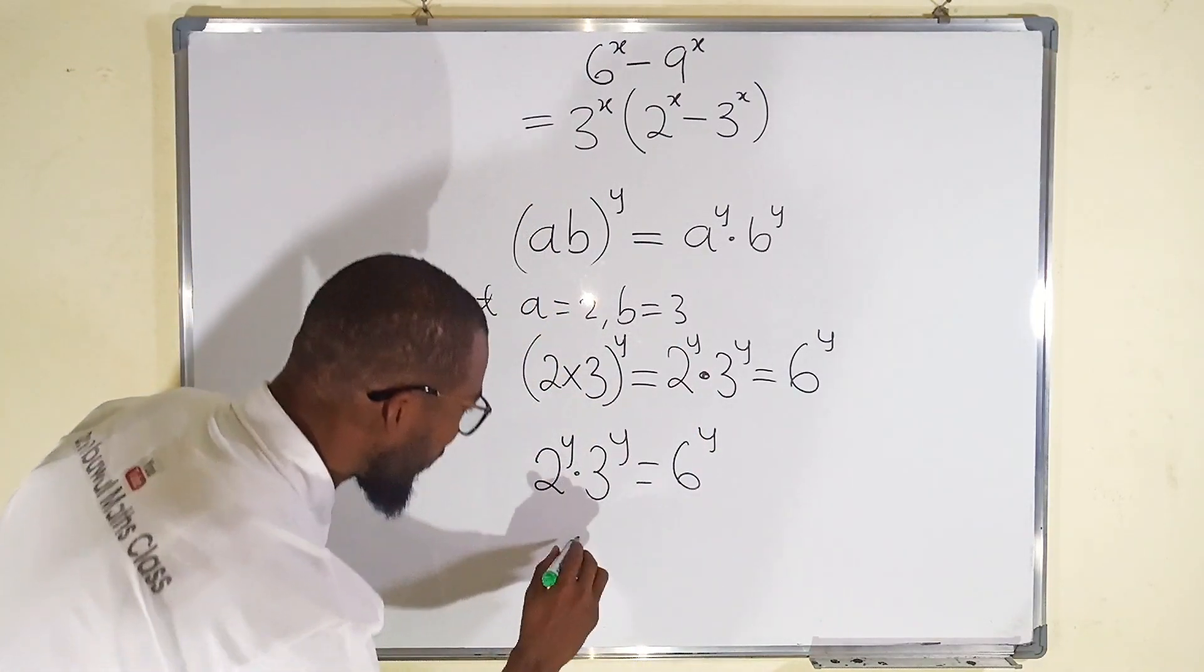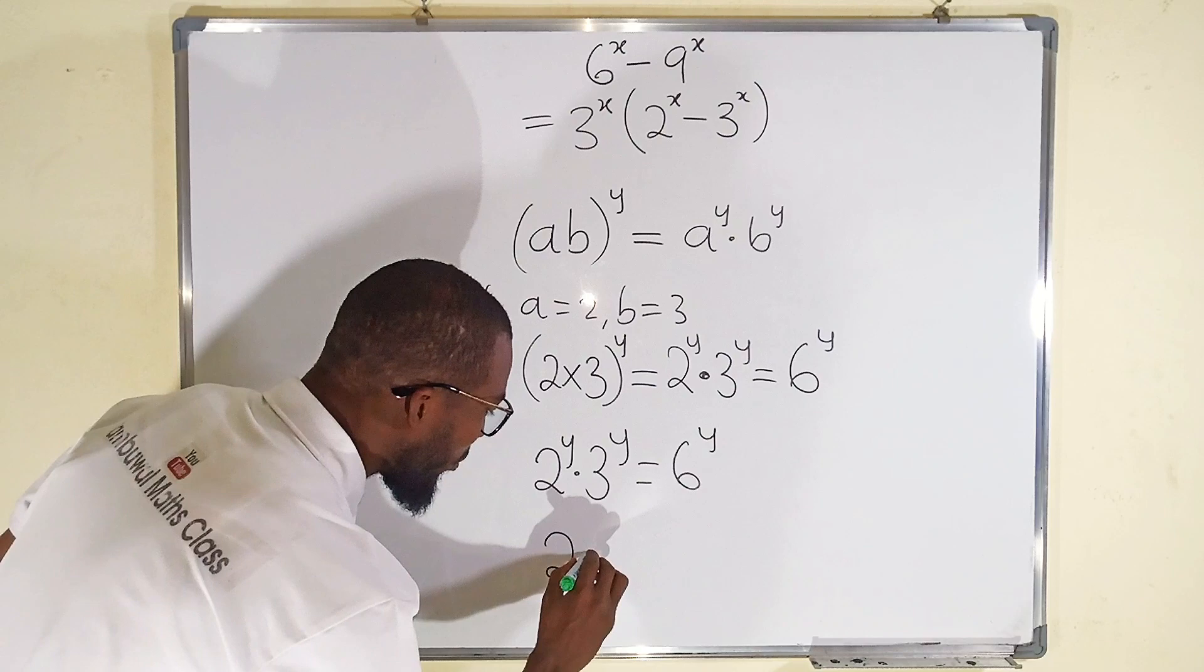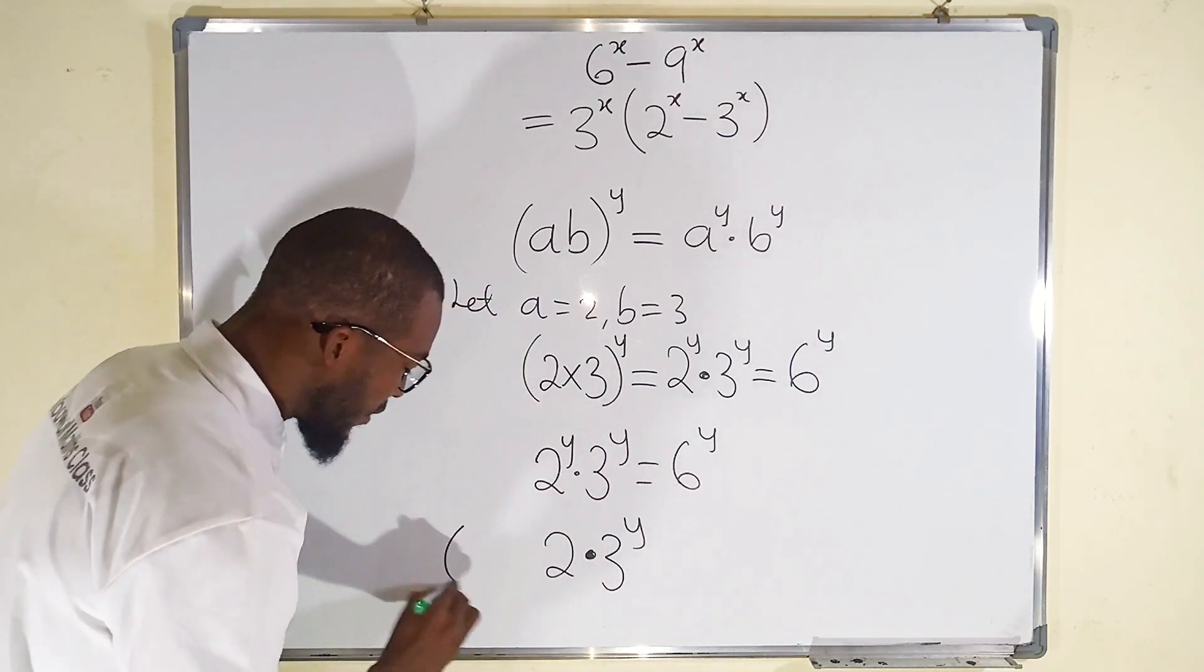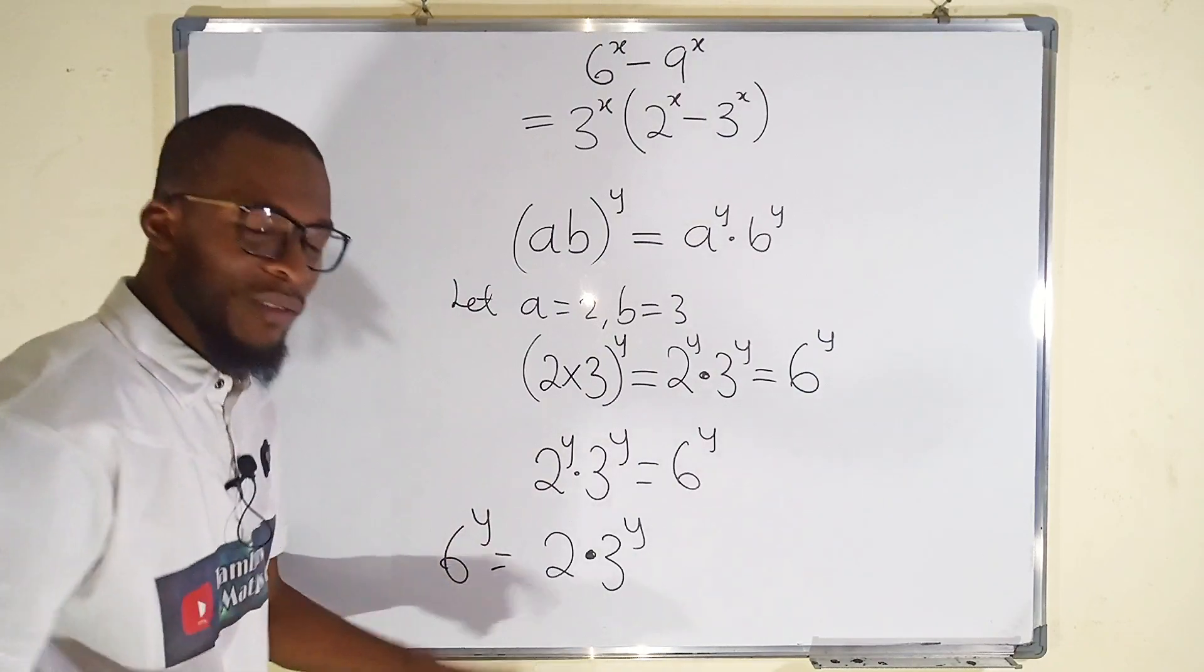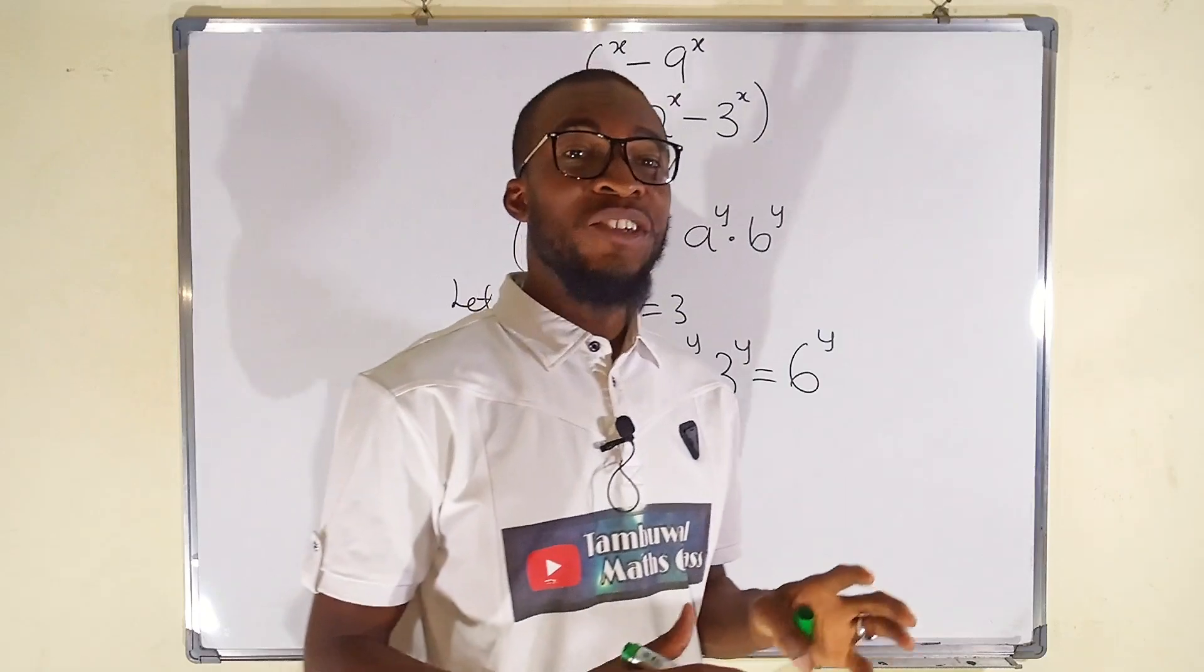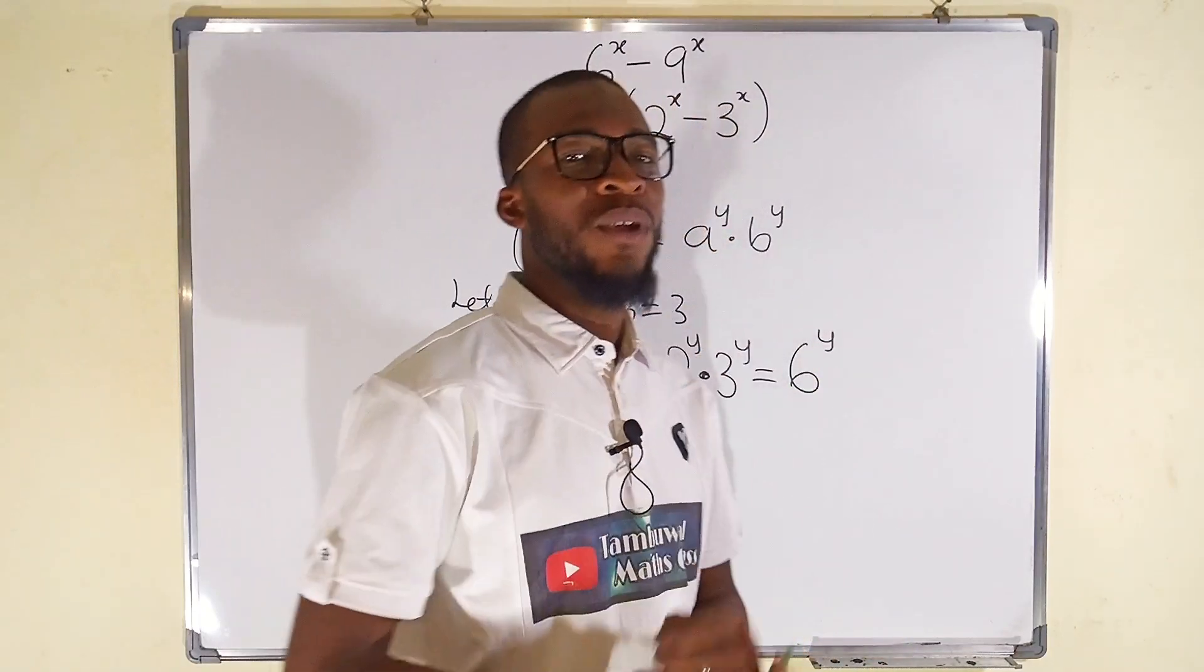Why didn't we say this is the same as 2 multiplied by 3^y? Why can't we say that 6^y is the same as this? This is not true because that power is shared among the terms under the bracket.